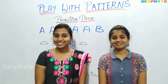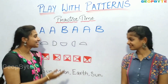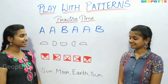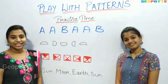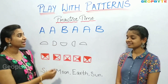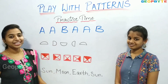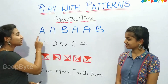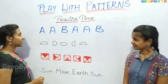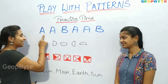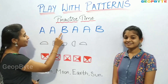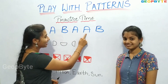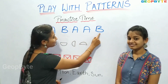Hey kids, see here. We have different patterns. Figure out the rule for each and continue the patterns. Children, if you see the first pattern, we have A, A, B. A, A, B.